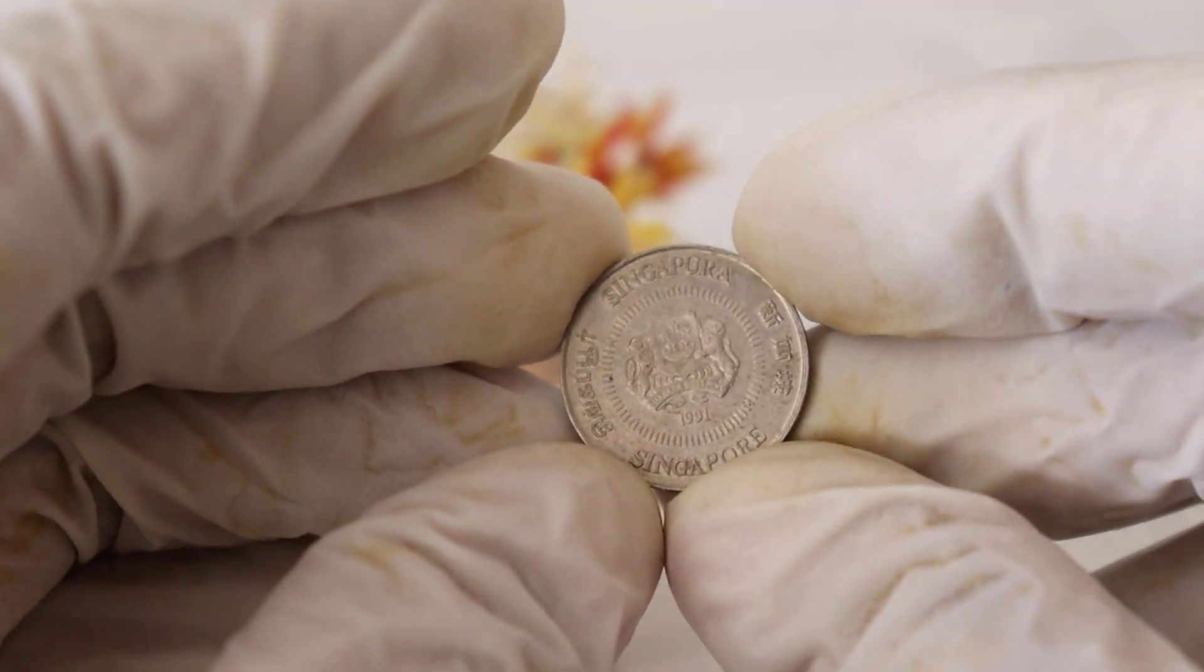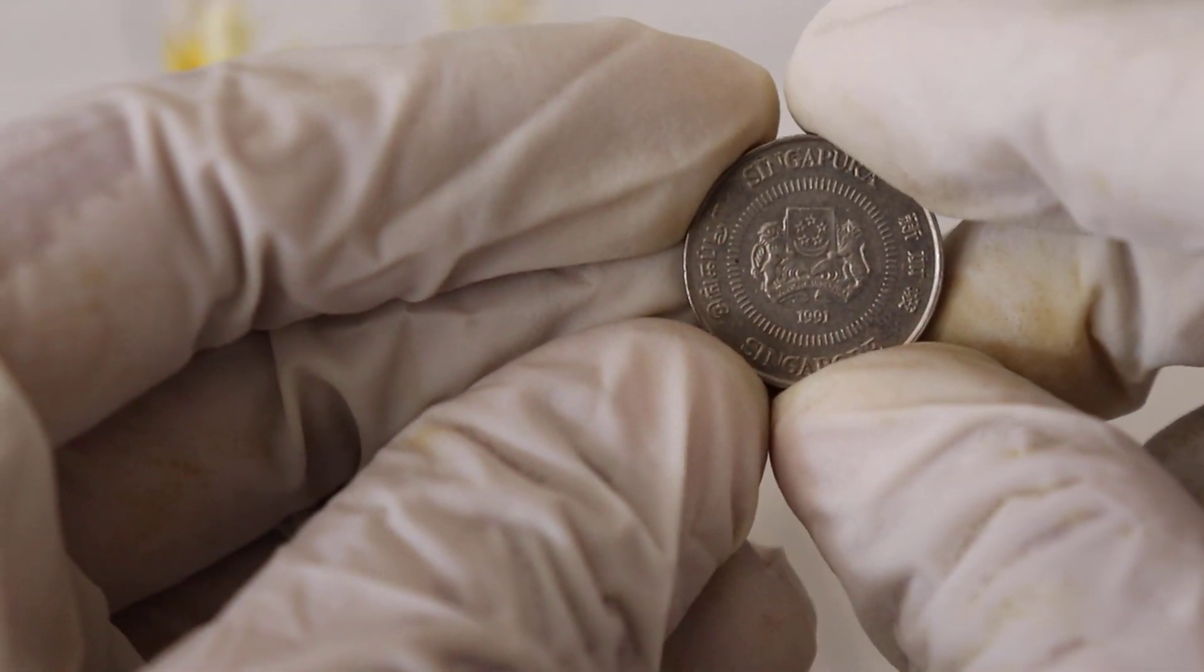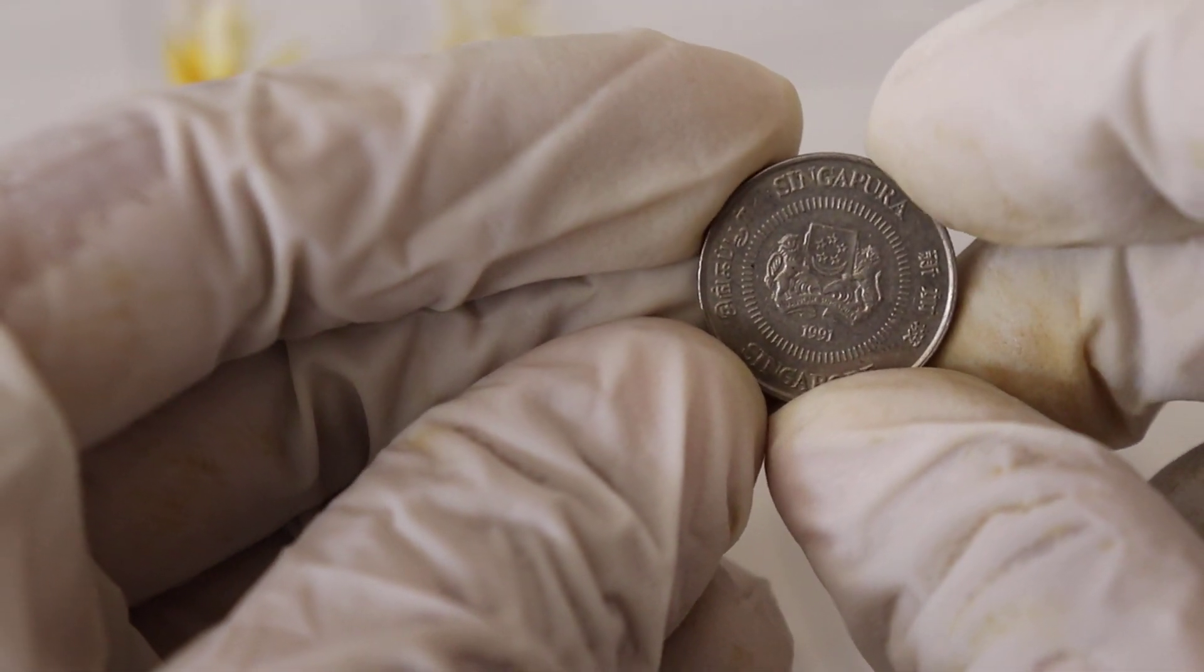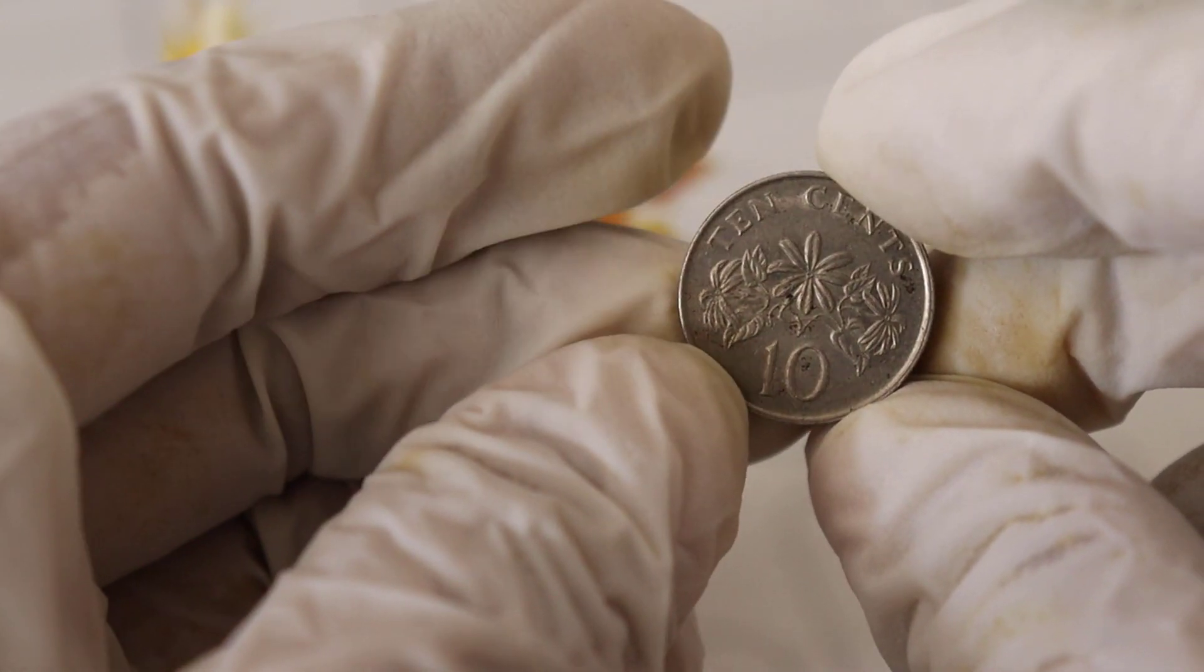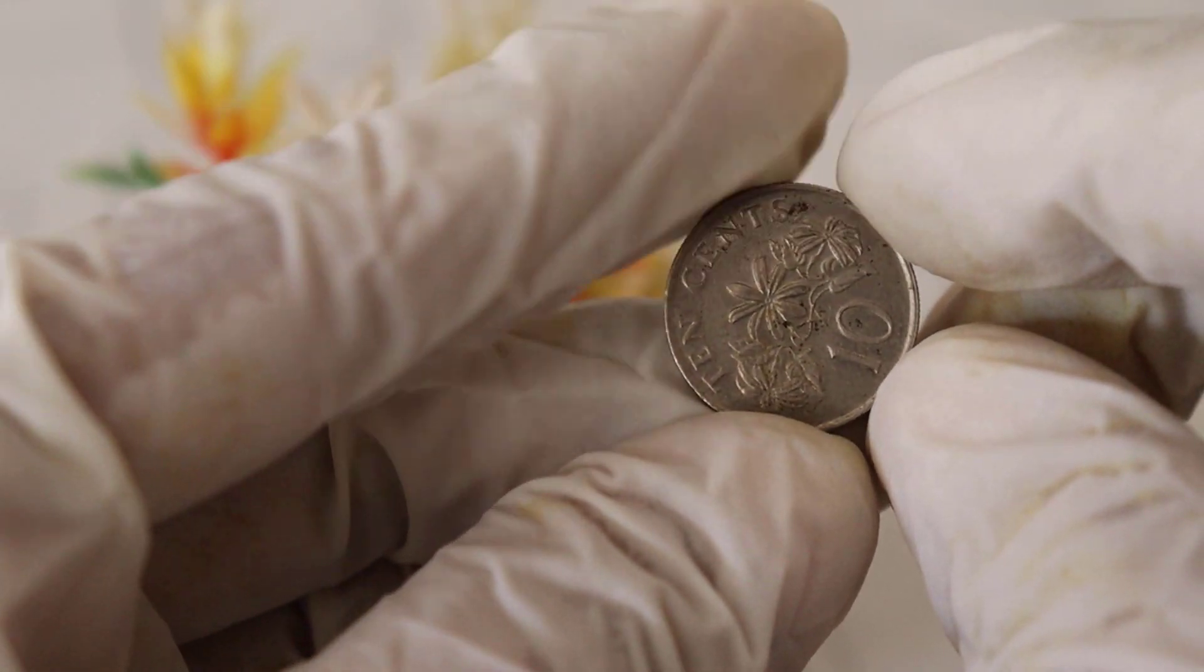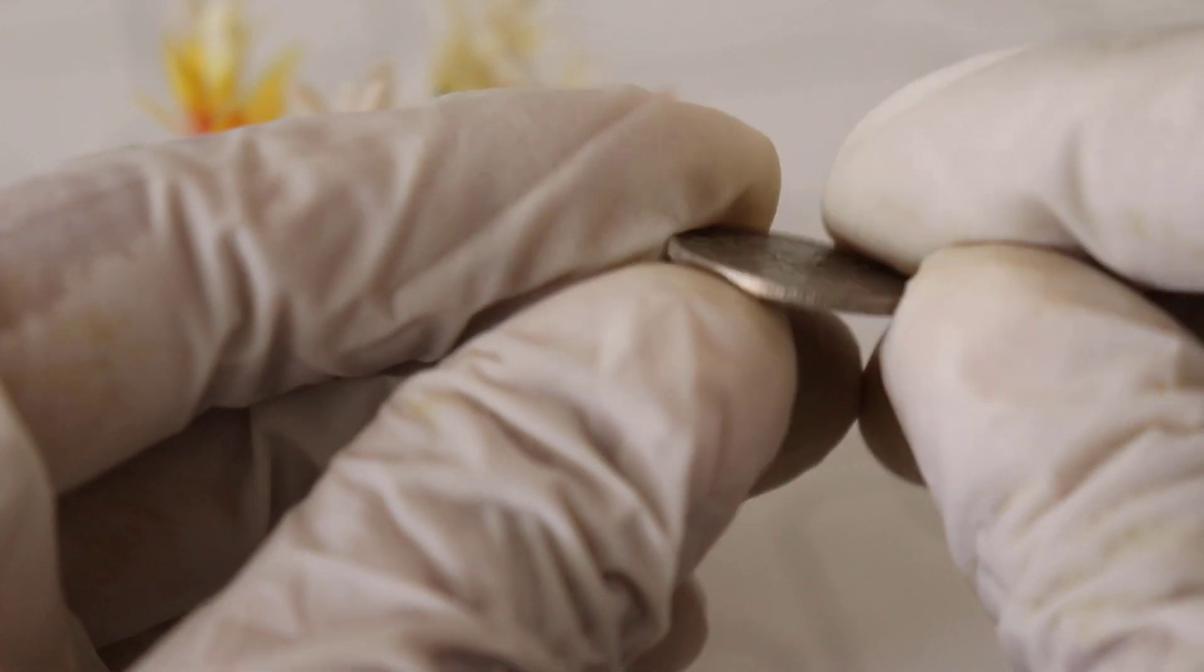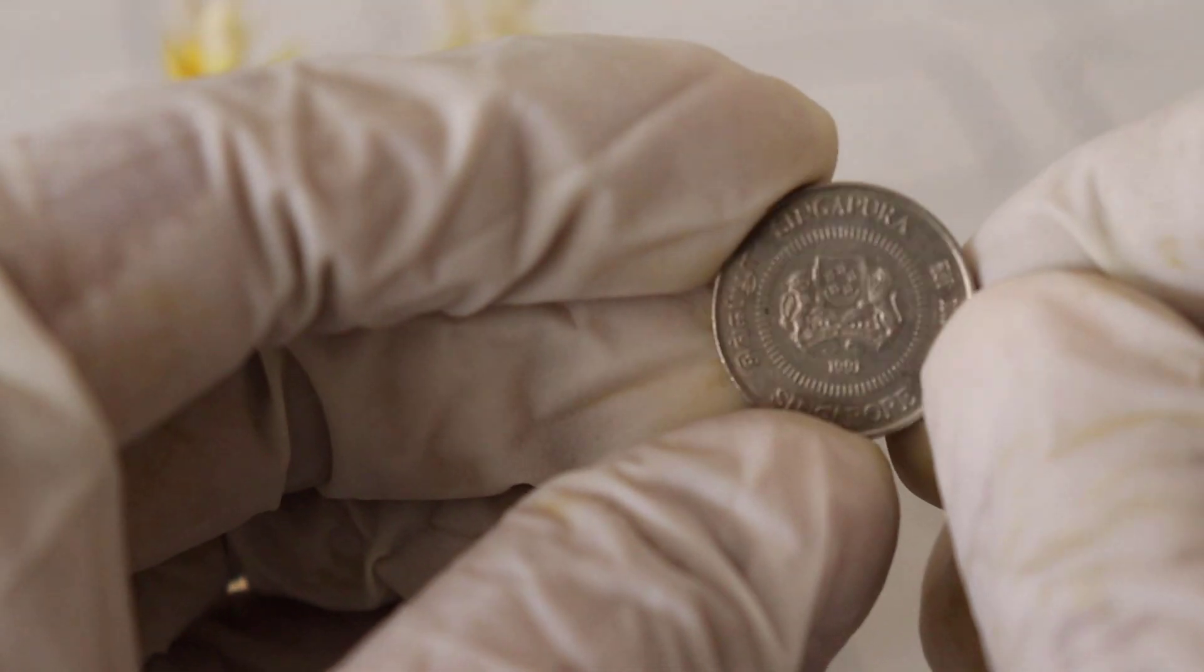Take a look at this beautiful coin up close. The obverse showcases a majestic lion, a symbol of Singapore's strength and courage. Below the lion you'll find the year 1991. On the reverse side, you'll see the numeral ten encircled by a wreath of rice stalks, representing Singapore's agricultural heritage.